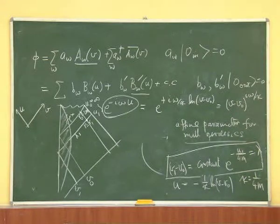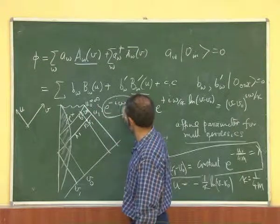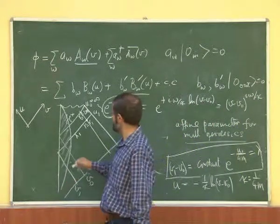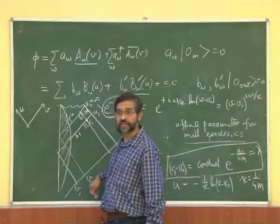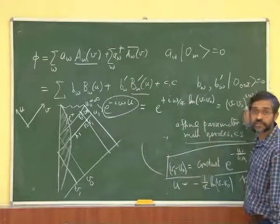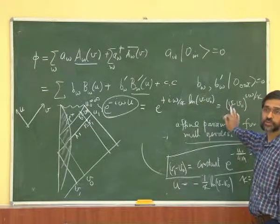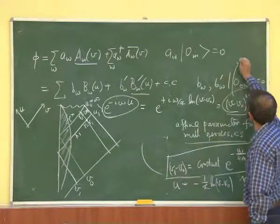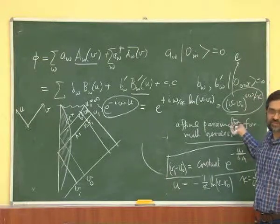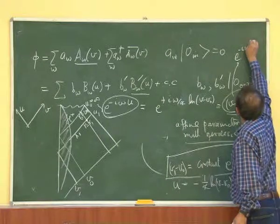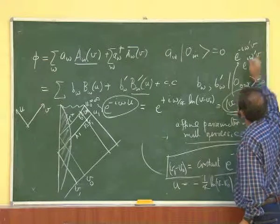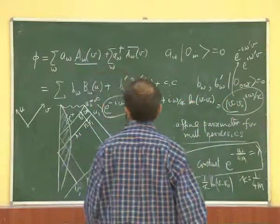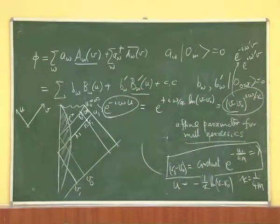In order to find out the mixing between the future modes and the past modes, I have to do a Fourier transform of this — which is precisely what we did yesterday. So I am not going to do it again, I am just going to write down the result. This object has both positive and negative frequency components, so it will have the Bogoliubov coefficients alpha and beta. The relation between beta and alpha will be given by exactly what we found yesterday.